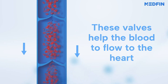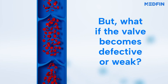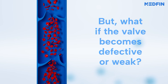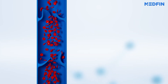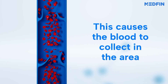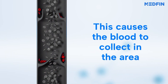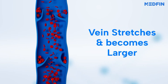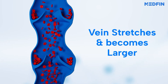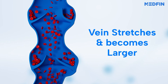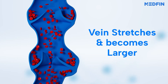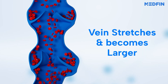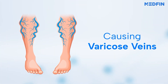But what would happen if the valve gets damaged or weak? This results in blood collecting in that area. Over time, the increased pressure causes the vein to stretch, weaken, and become larger and twisted. This condition is called varicose veins.